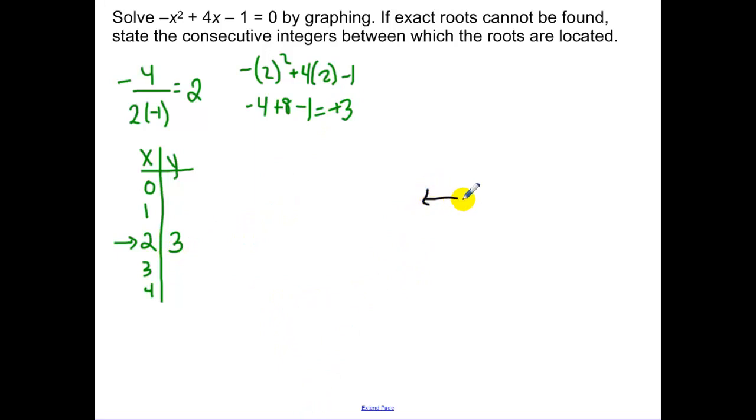Alright. So graphing this. Put your vertex down. We know we're going to open down because the a is negative. Let's find f of 0. When I plug in 0 there for x, we have negative 1. And 4 is going to have that same value. And then when I plug in 1, I have negative 1 squared plus 4 times 1 minus 1. So that's negative 1 plus 4 minus 1. So that's going to be a positive 2.